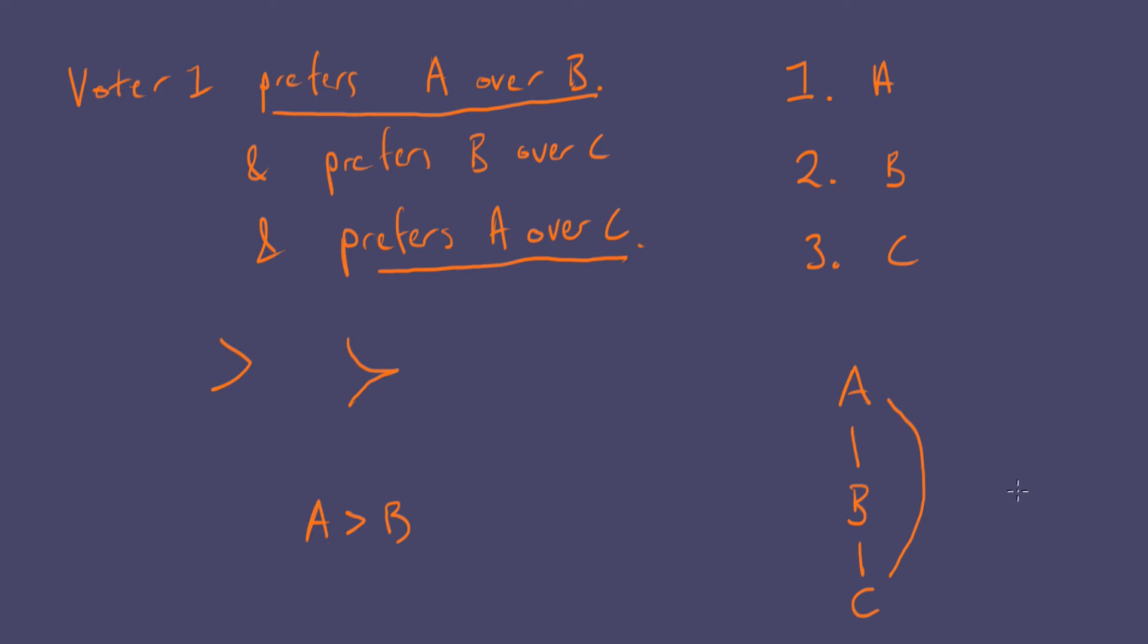Now that is something generally safe to infer, assuming that the preferences the voter has are transitive. Transitivity means whenever it's the case that you have a preference between two things like this, and another two things like that, A and B, and then B and C, then you can fill in the preference that sort of jumps over the A over C preference. It goes in the same direction.